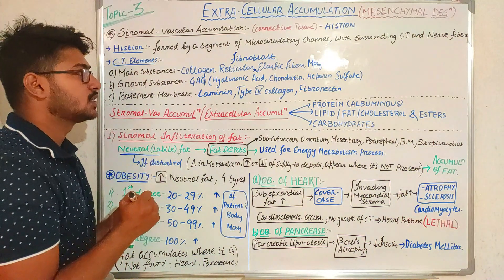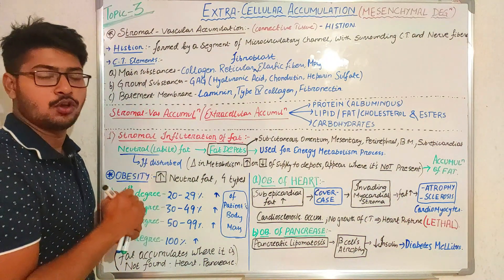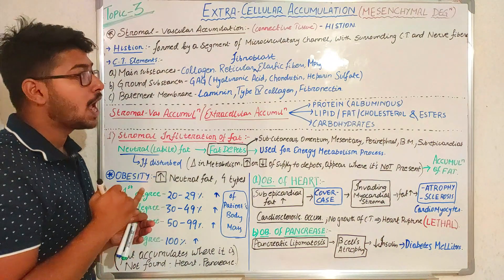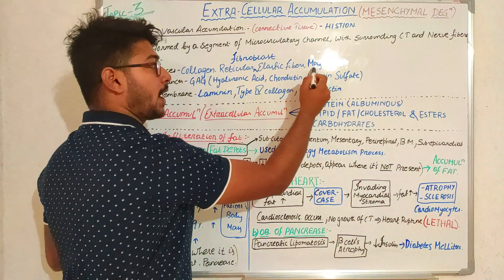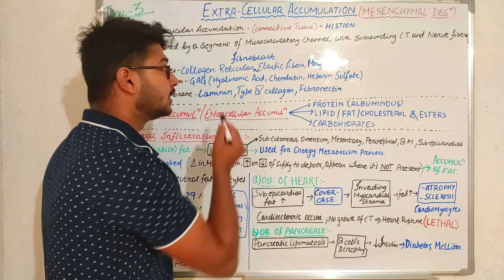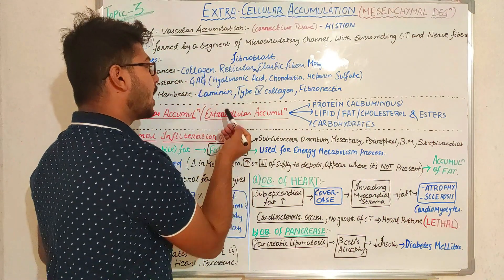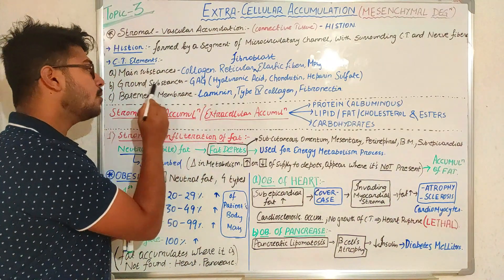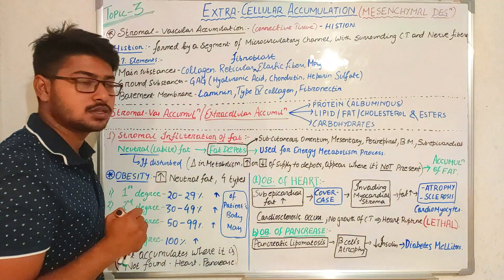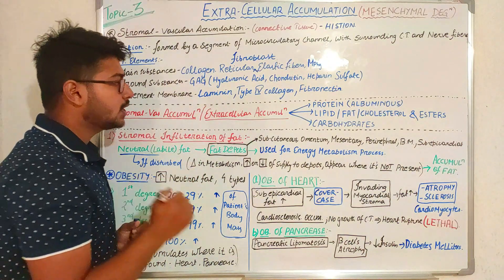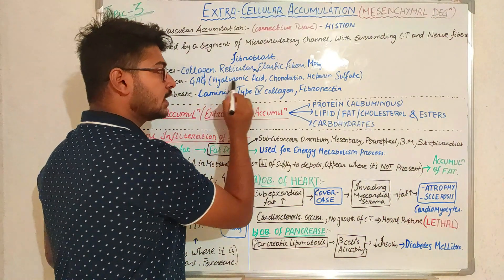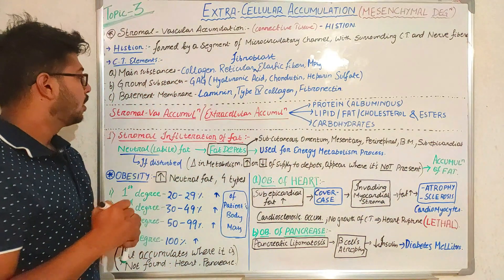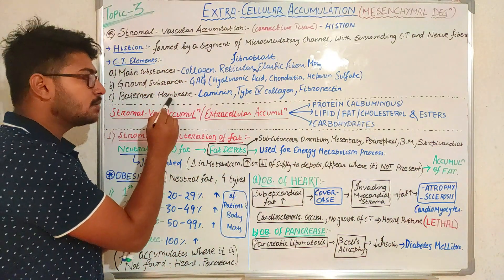What comprises the main substances? Main substances comprise collagen fibers, elastic fibers, reticular fibers, and also macrophages and fibroblast cells that produce the collagen and the glycosaminoglycans, which is a main component of the ground substances. The glycosaminoglycans also comprise hyaluronic acid, chondroitin sulfate, and heparin sulfate.